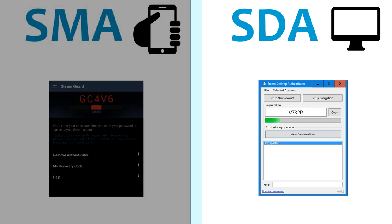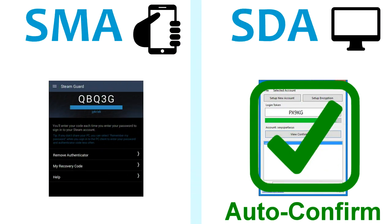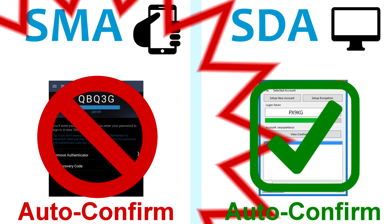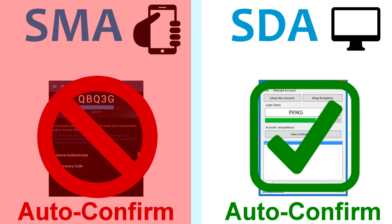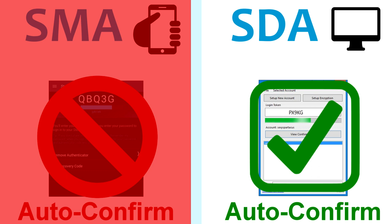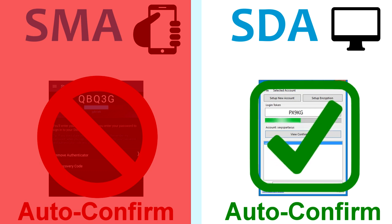There's one big difference between the desktop authenticator and the mobile authenticator. The desktop authenticator can confirm trade offers and Steam Community Market listings automatically, while the mobile authenticator can't — which means you need to accept every trade on the mobile authenticator one by one. Because it takes a lot of time to accept all those trade offers one by one, people rather use the desktop authenticator. Later in this video I'll be pointing out some more differences between the two authenticators.